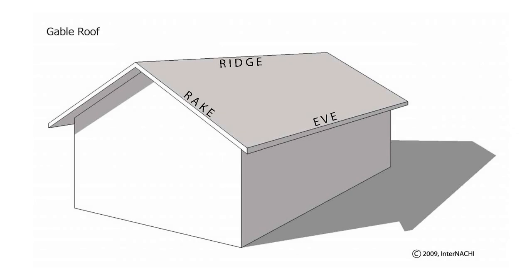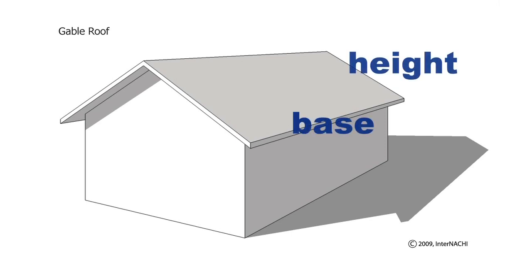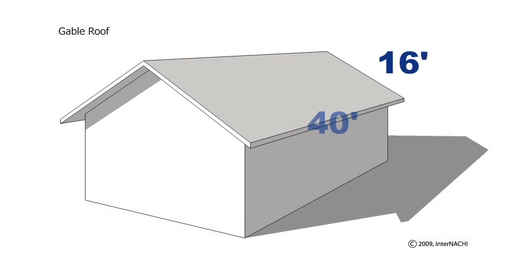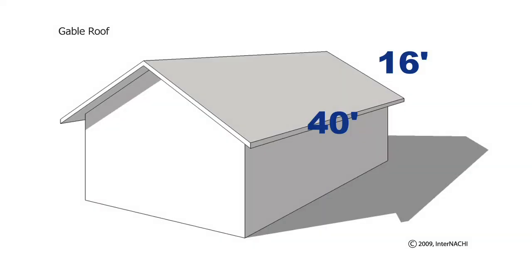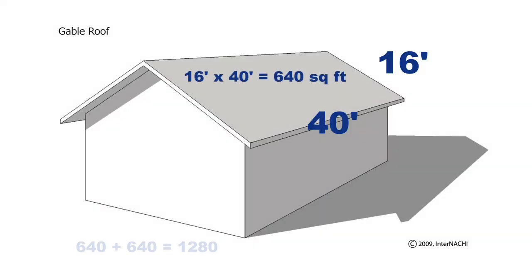This is a gable roof. A gable roof has two planes. Multiply the base times the height for each plane or rectangle to get the square footage for each plane, then add the two rectangles together to get the total square footage of the roof. Assuming one rectangular plane is sixteen by forty and the other plane is sixteen by forty, the area of each plane is sixteen times forty, which equals six hundred forty square feet. Adding the two rectangular planes together, the total square footage of the roof is one thousand two hundred and eighty square feet.